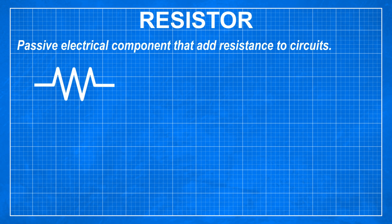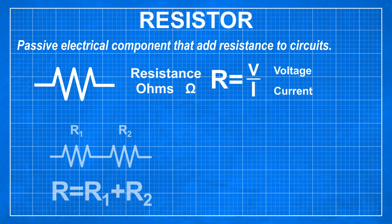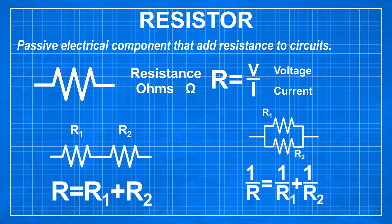Now some basic components. Resistors are passive electrical components that add resistance to circuits. Their value is expressed in Ohms. Resistors can be connected in series and their resistance adds up, so overall resistance increases, or in parallel and we calculate it like this. In this case resistance is lower.